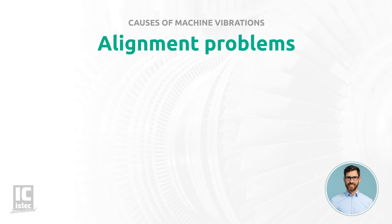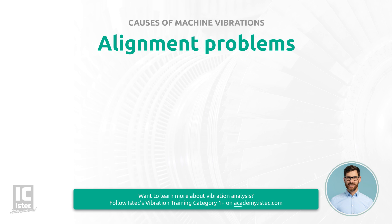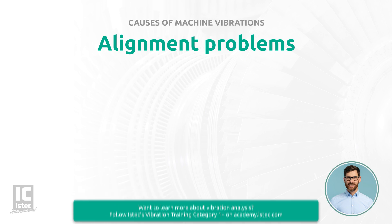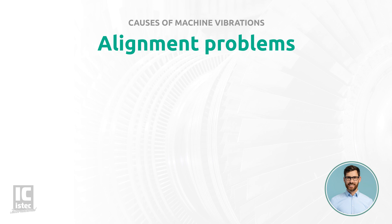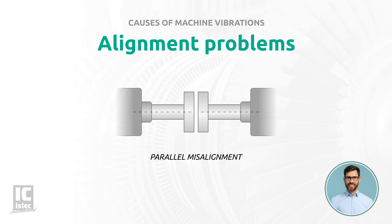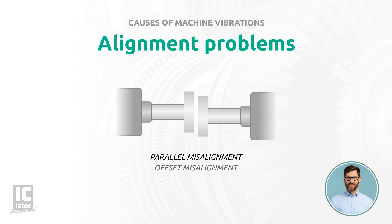Alignment problems. When two rotating machines are connected, the correct alignment of these machines is essential. When the alignment is not done correctly, we speak of misalignment. We can distinguish three types of misalignment. First, parallel misalignment occurs when the shaft center lines are parallel but are not in line. This can be both horizontal and vertical. Parallel misalignment is also known as offset misalignment.